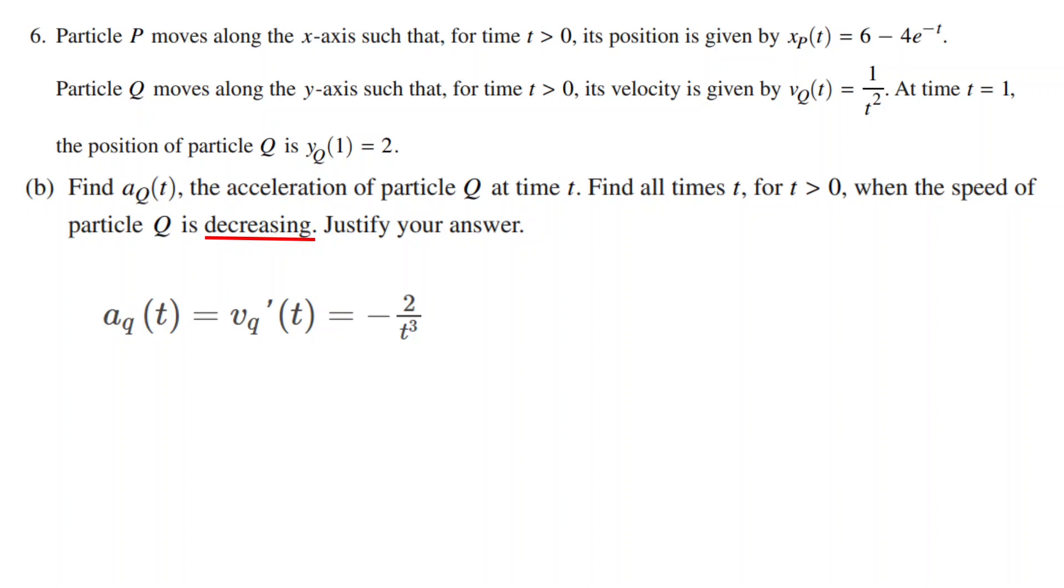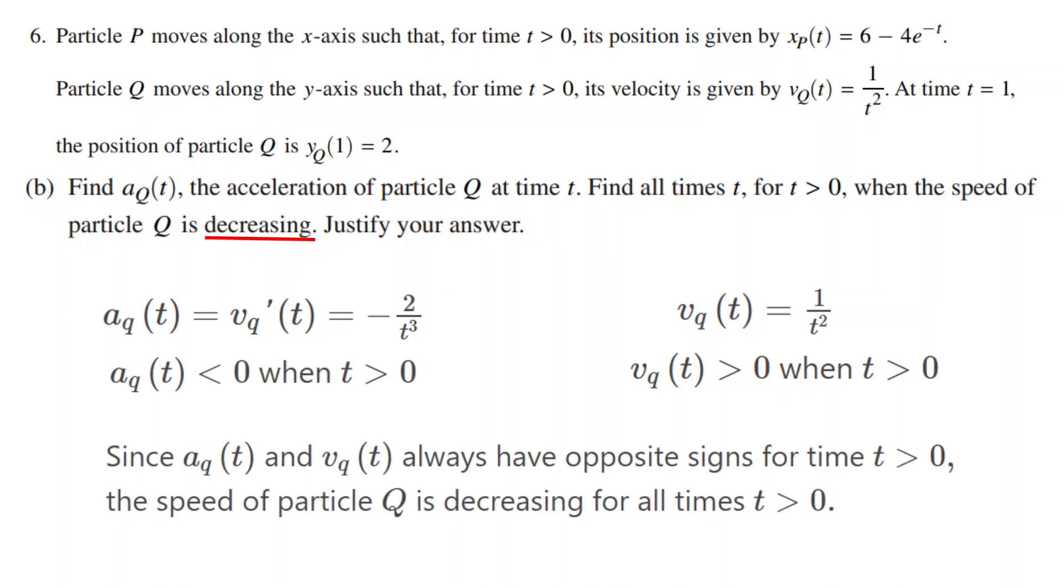Next, we find when the particle speed is decreasing. We have to check when the acceleration and velocity have opposite signs. Since vq has t squared, it is always positive. t is always positive, so the t cubed in aq is always positive as well. The negative sign at the start of aq makes it negative, however. Since aq of t and vq of t always have opposite signs for time t greater than 0, the speed of particle Q is decreasing for all times t greater than 0.